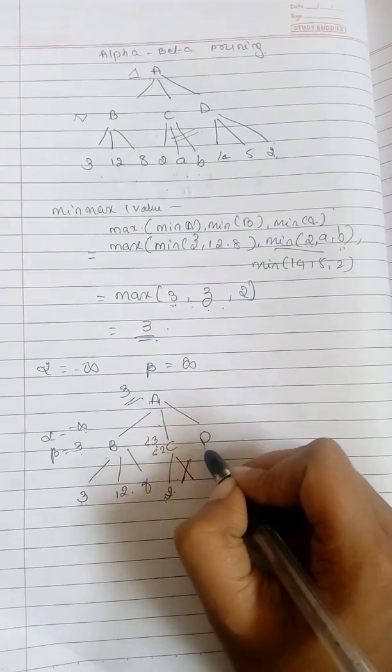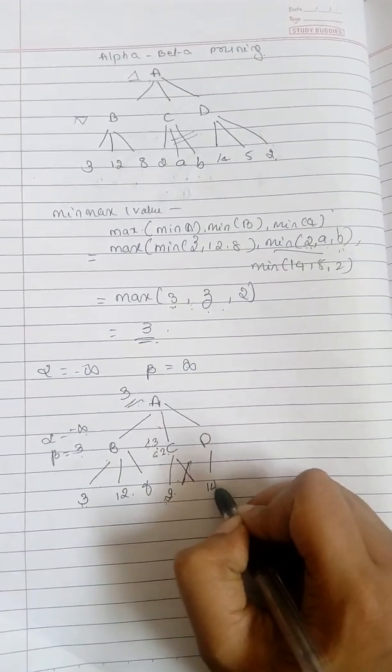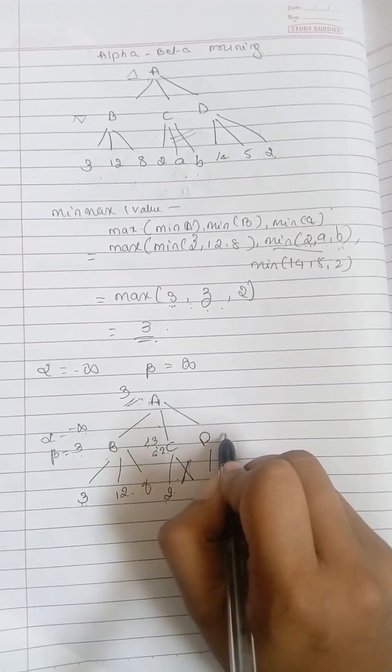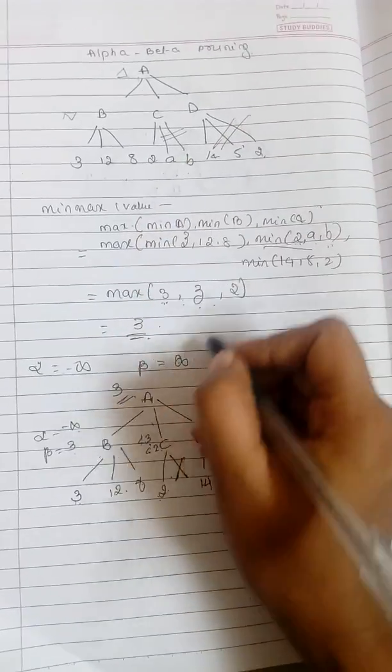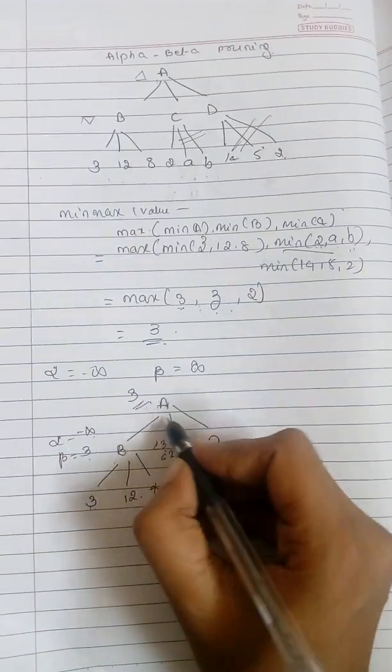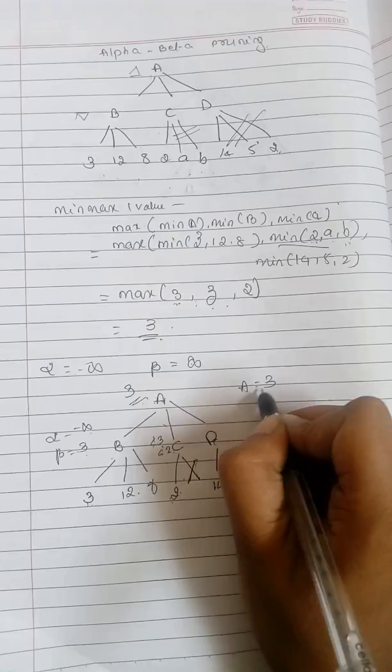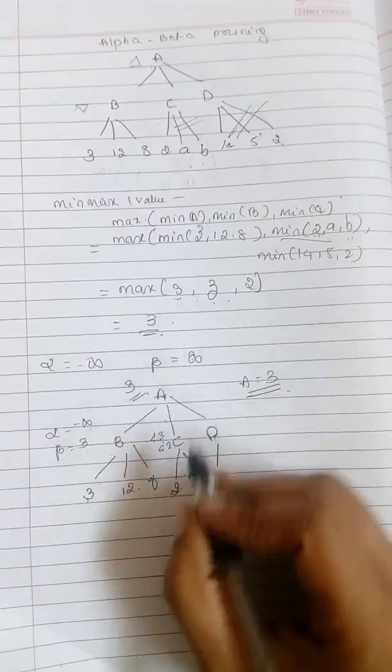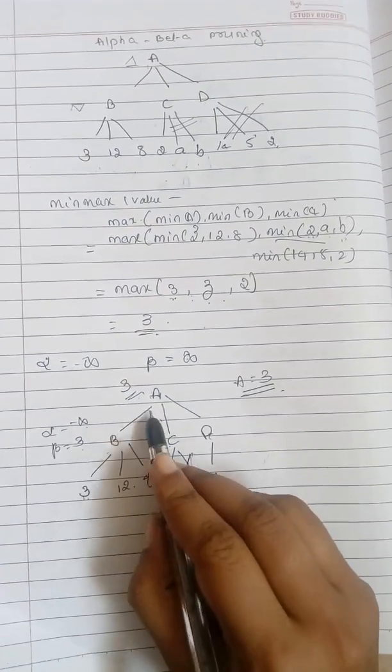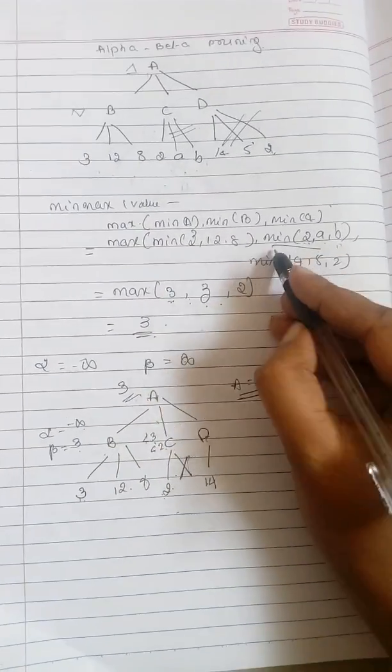Next is D - D to 14, so minimum is again it's not holding true, then these two nodes will get cut. So that is the reason A will have the value of 3. So even though we don't know A and B, we can still derive this tree and we can find out the root value.